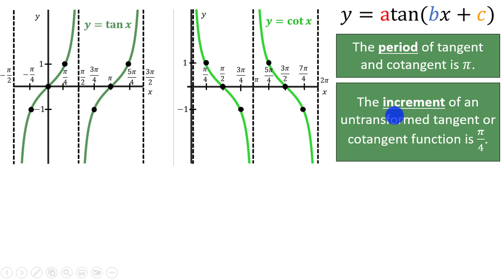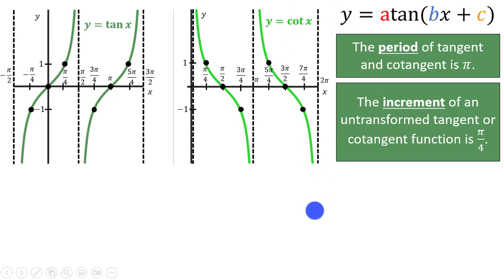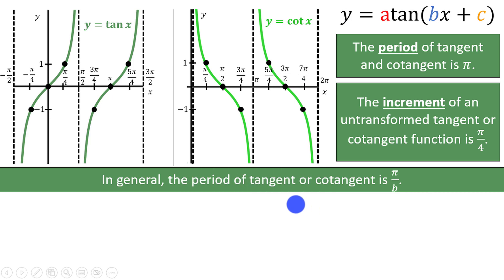This is what I call the increment. Now of course cotangent and tangent have asymptotes every so often, so sometimes instead of a key point we will have an asymptote. In general, you can find the period of tangent or cotangent by taking pi and dividing by the coefficient b that is multiplying x.